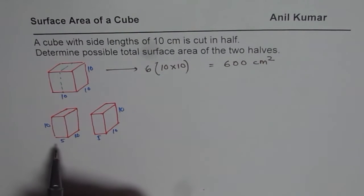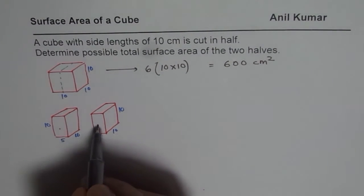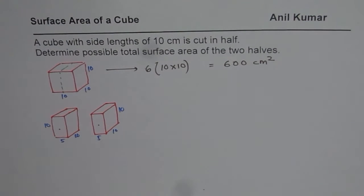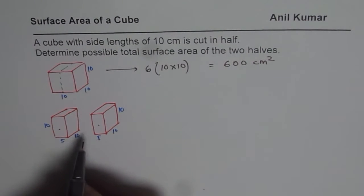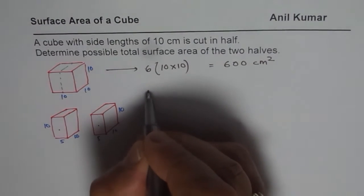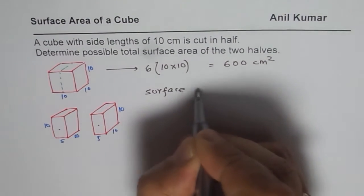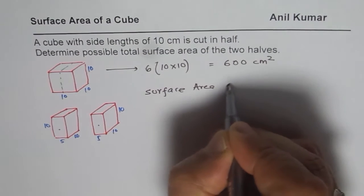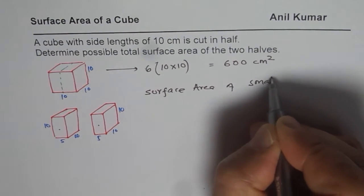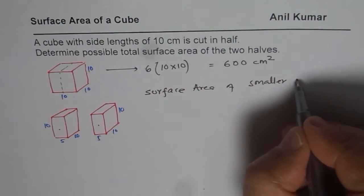Now when you cut it open, what do we get? We get 2 with exactly same areas. So let us calculate the surface area of the smaller piece. So we shall now calculate surface area of smaller rectangular prism.